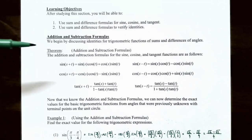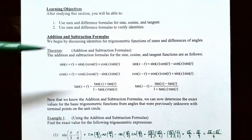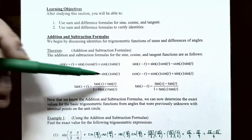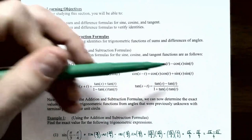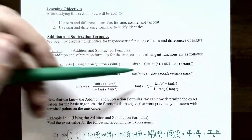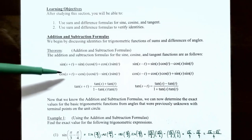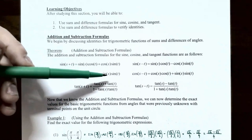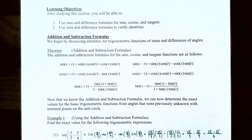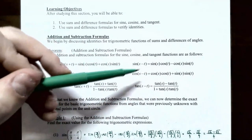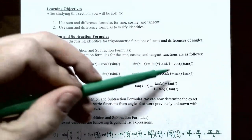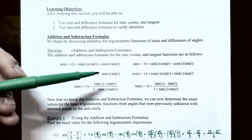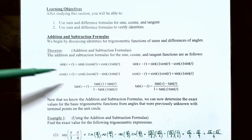The sum formula for cosine: cos(s + t) equals cos(s)·cos(t) minus sin(s)·sin(t). And the difference formula: cos(s - t) equals cos(s)·cos(t) plus sin(s)·sin(t). Notice that for the cosine function, a sum in the argument gives a difference between the two terms in the formula, and a difference in the argument gives a plus between the two terms.